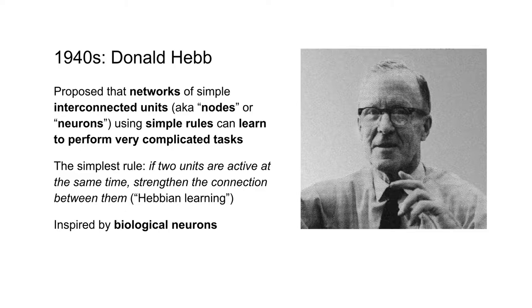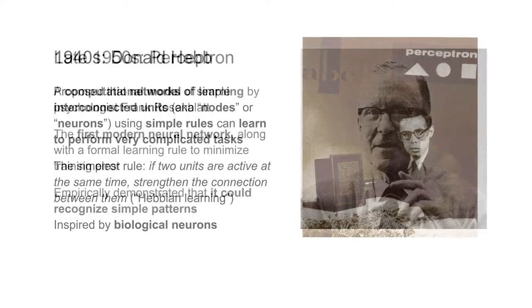These rules that Donald Hebb proposed are today called Hebbian learning. They're a little bit different than what's used in supervised learning. They play a bigger part in unsupervised learning, so we won't talk in depth about them. But this was the beginning of our conception of neural networks, which are models of simple units that are connected to each other and that learn by changing the weights between the units.